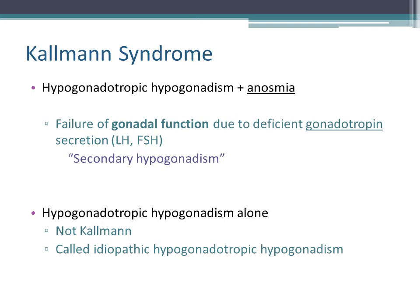Hypogonadotropic hypogonadism alone is not Kallmann syndrome — it is called idiopathic hypogonadotropic hypogonadism.